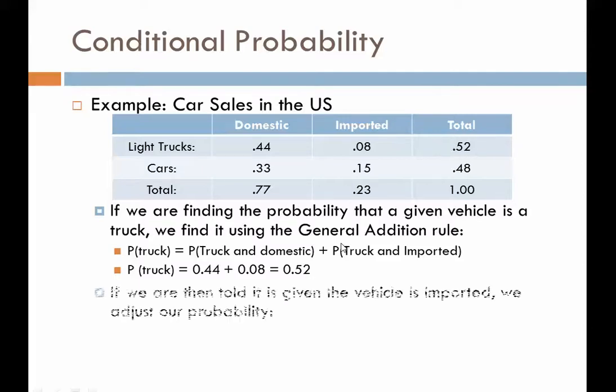Now let's change this up. That was the probability that any vehicle we pick would be a truck. But let's say we know ahead of time we only want to take into account imported vehicles. So we ask: given that our vehicle is imported, how does that change the probability that we would pick a truck?